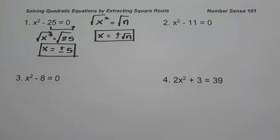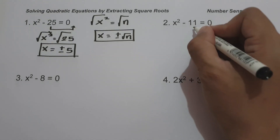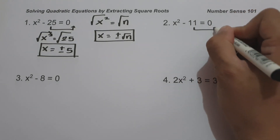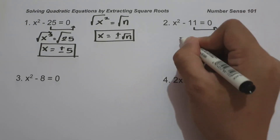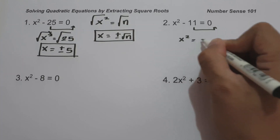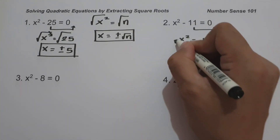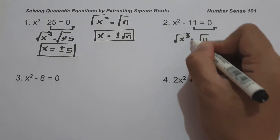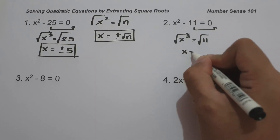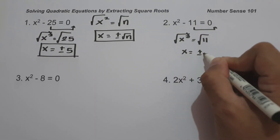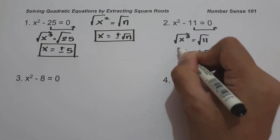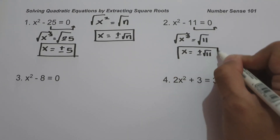On example number two, we have x² - 11 = 0. Just like in example number one, let us move negative 11 to the other side of the equation. It will give us x² = 11. So let us take the square root of both sides. The value of x is positive and negative square root of 11, and this will be our answer.